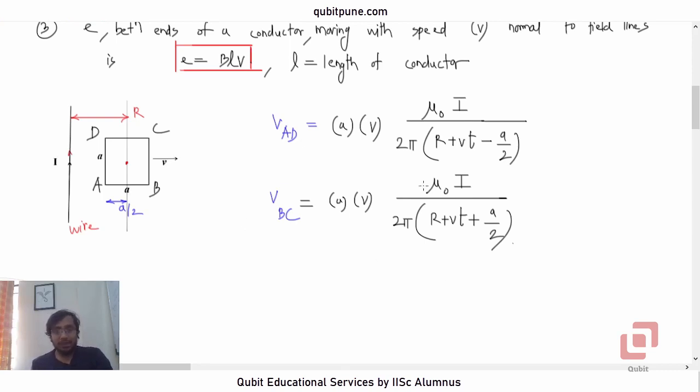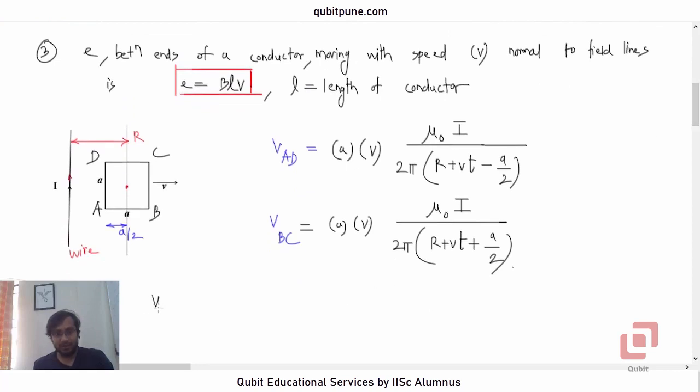Now, to calculate the net EMF, net induced EMF, we must be algebraically adding V_AD and V_BC. Now, if we consider V_AD and V_BC, the sense of the EMF induced in both the AD and BC will be the same. What does that mean? That means in order to calculate the net EMF, we have to first consider the difference between V_AD and V_BC. We have to add them algebraically. It's like connecting the negative terminal of a battery to a negative terminal of another battery in series.